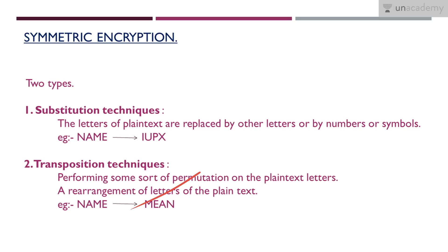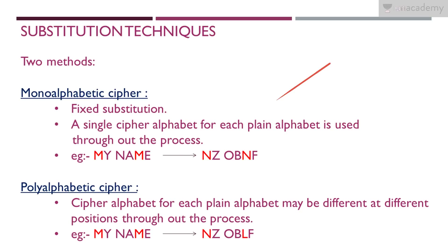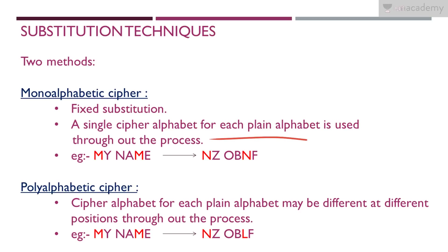Now let's learn some substitution and transposition techniques. In substitution techniques we have mono alphabetic ciphers and poly alphabetic ciphers. A mono alphabetic cipher uses fixed substitution — for a given letter we always substitute the same element. For example, if N is always replaced with I, then wherever N appears in the message we put I. A single cipher alphabet is used throughout the entire process.